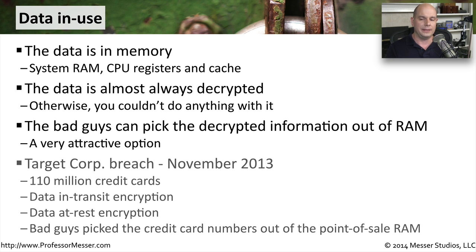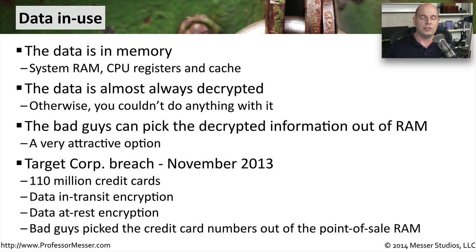In fact, this is exactly what happened in November of 2013 when we discovered the Target Corporation's breach, where there were well over 100 million credit cards made available to the bad guys. They were not able to see this information go across the network because Target was properly encrypting credit card information in transit. Target also was storing their information in an encrypted form, so all of the data at rest was also something the bad guys couldn't access. So what the bad guys did was put software on the registers themselves — the point of sale terminals. Those terminals were running a version of Windows, and they added malware into those terminals that would take the credit card numbers stored in memory, pull that information off, and store them in a separate area that was then transferred out of the Target network back to the bad guys.